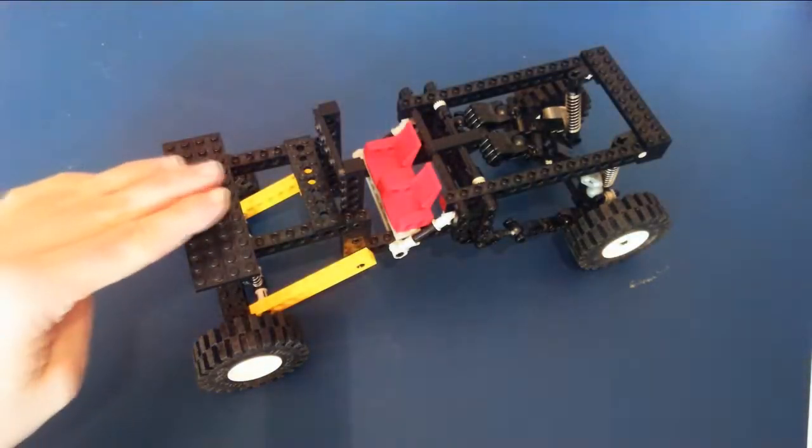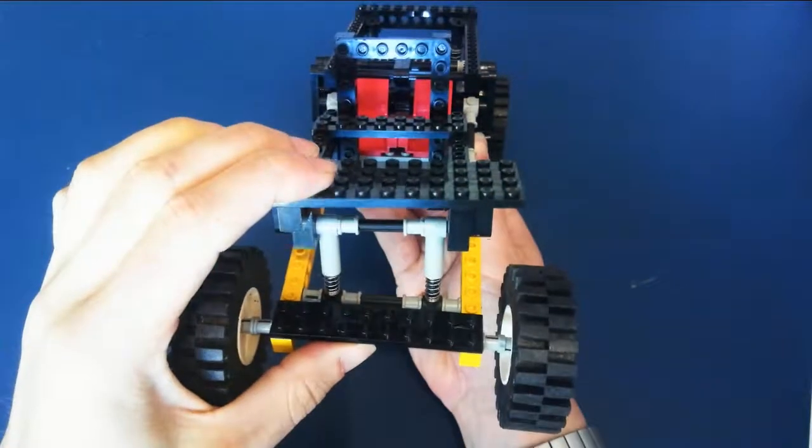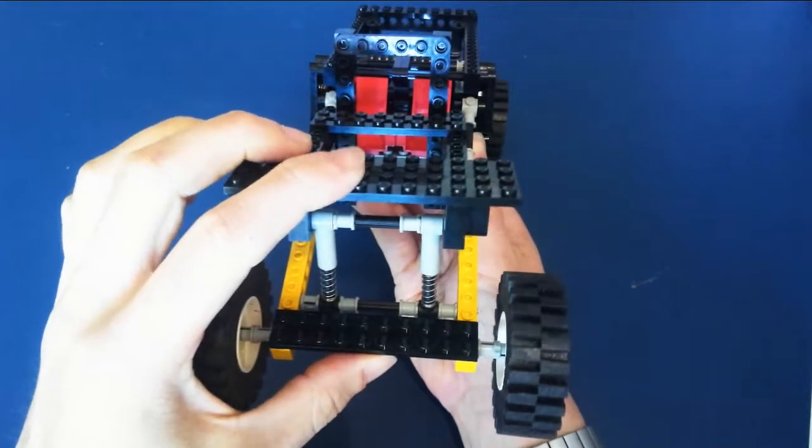This vehicle has live axles both front and rear. Because there are no ball joints, when the suspension is articulated both the left and right have to move together.